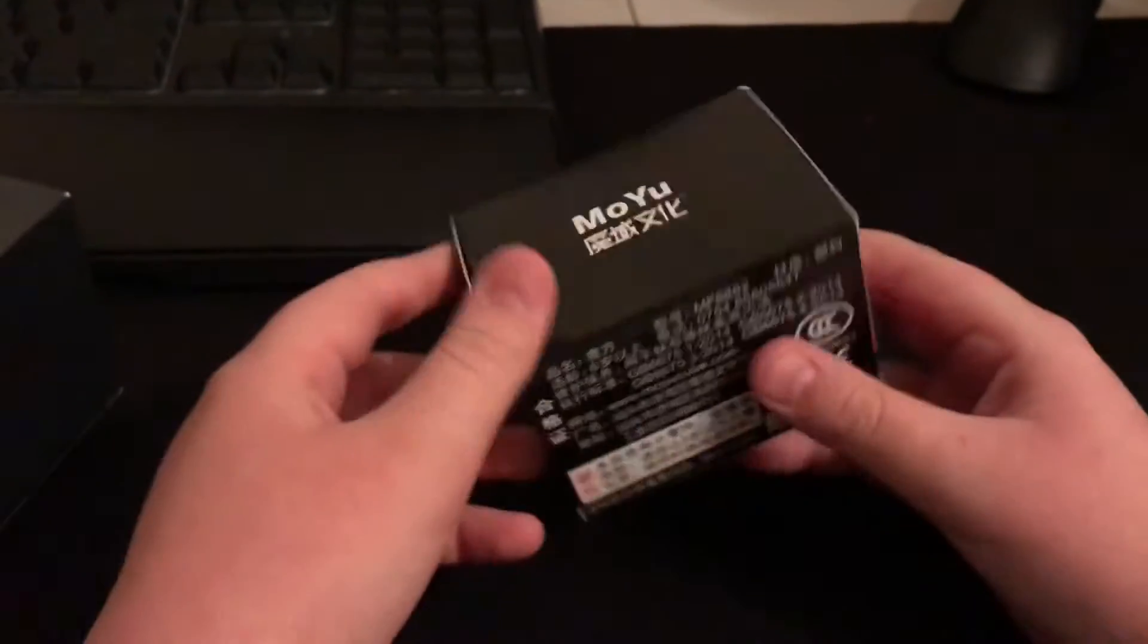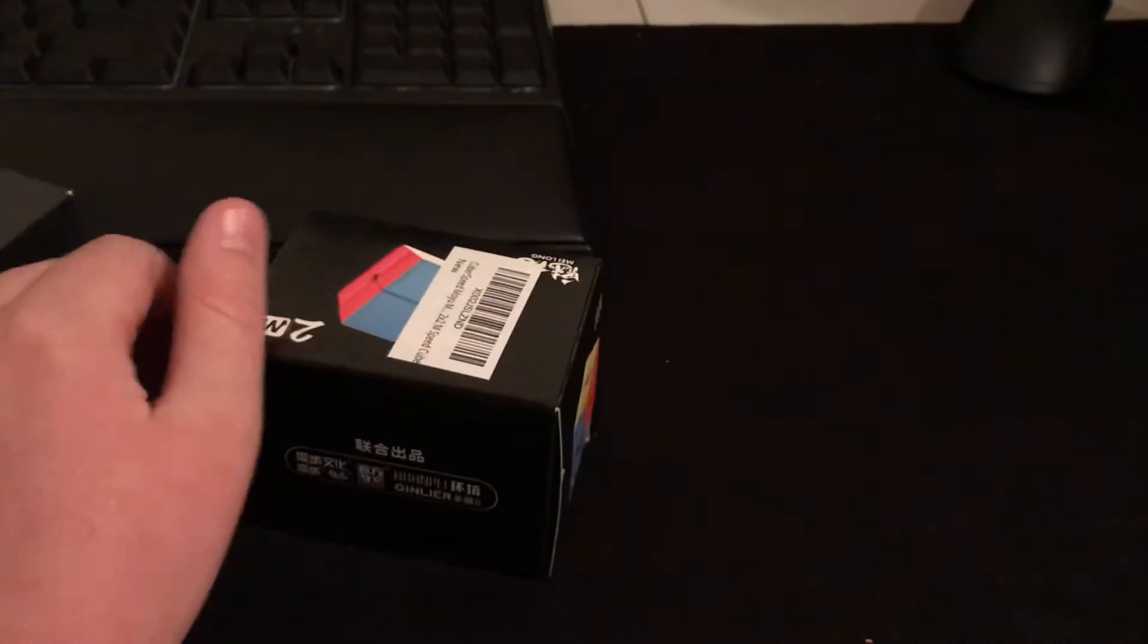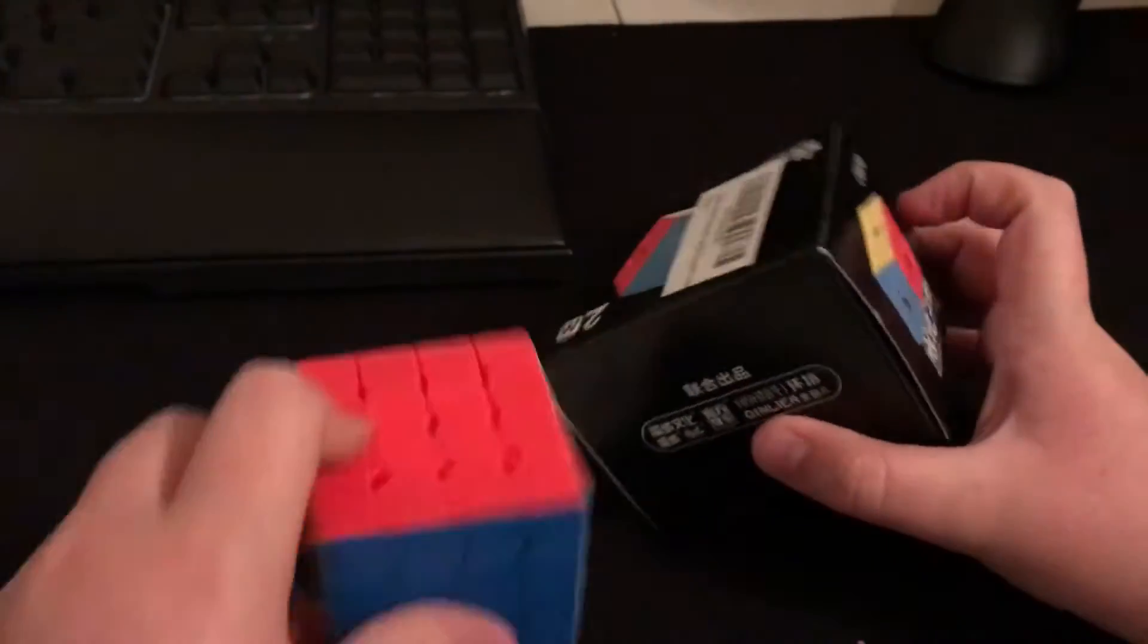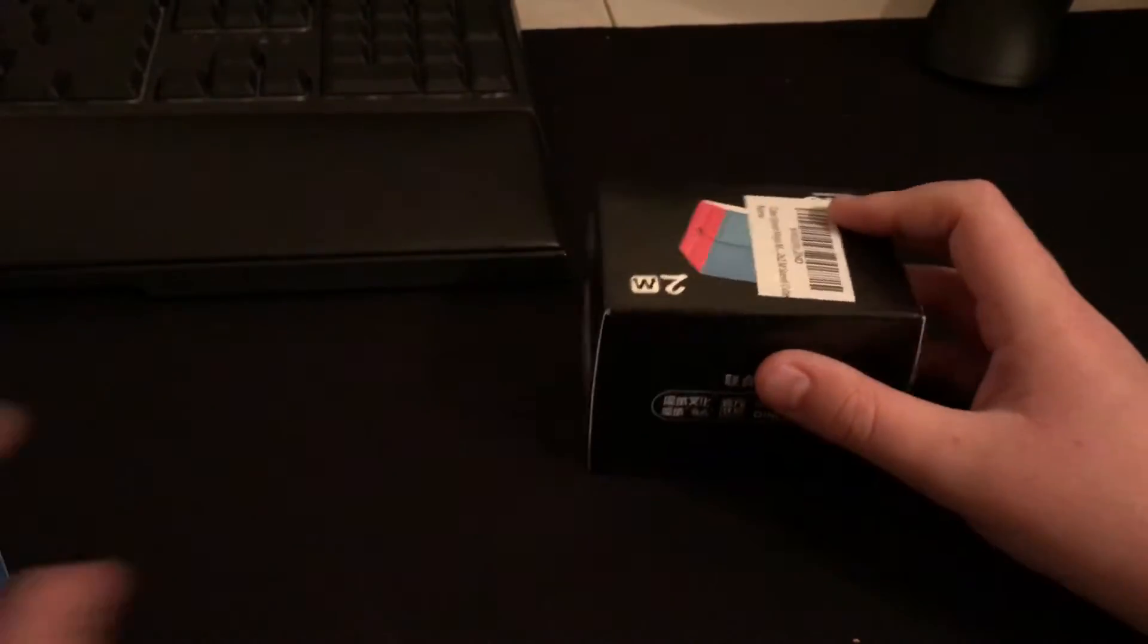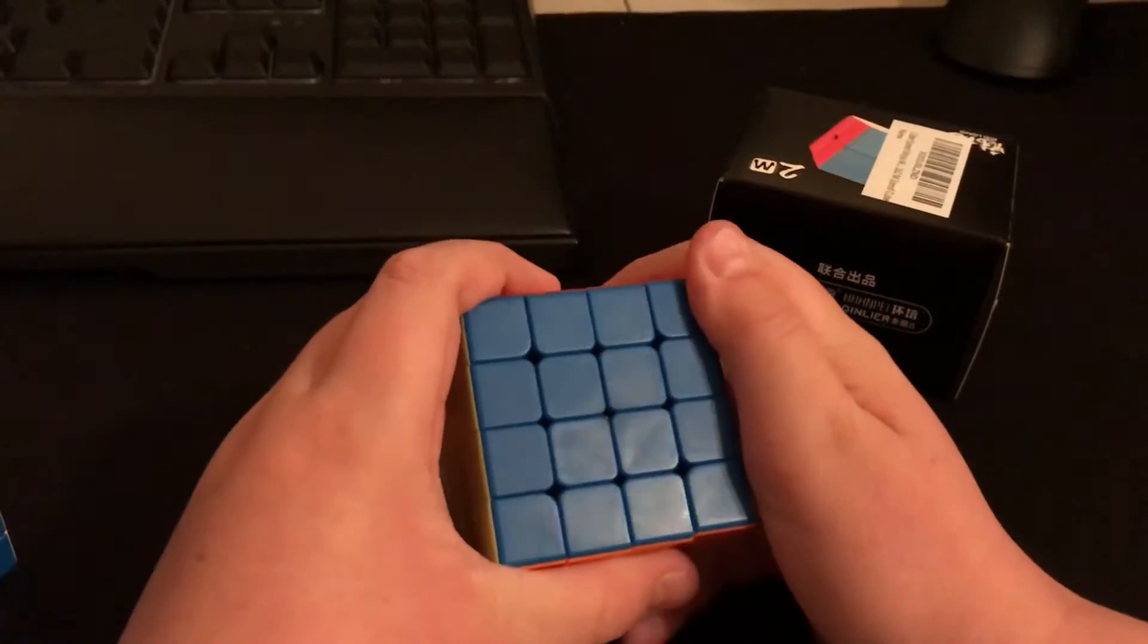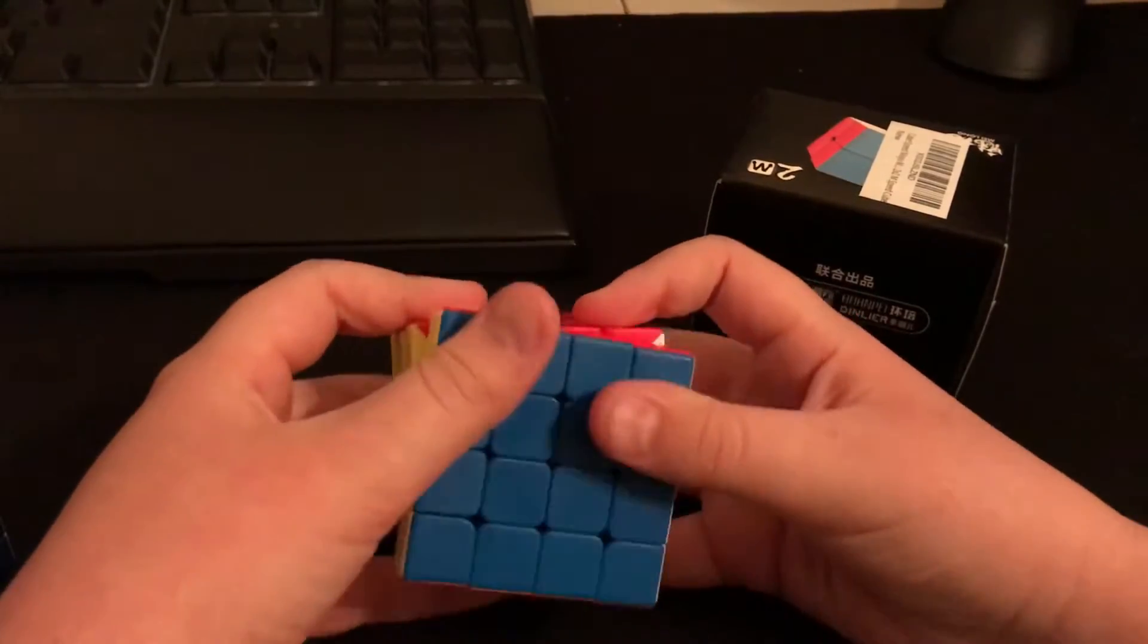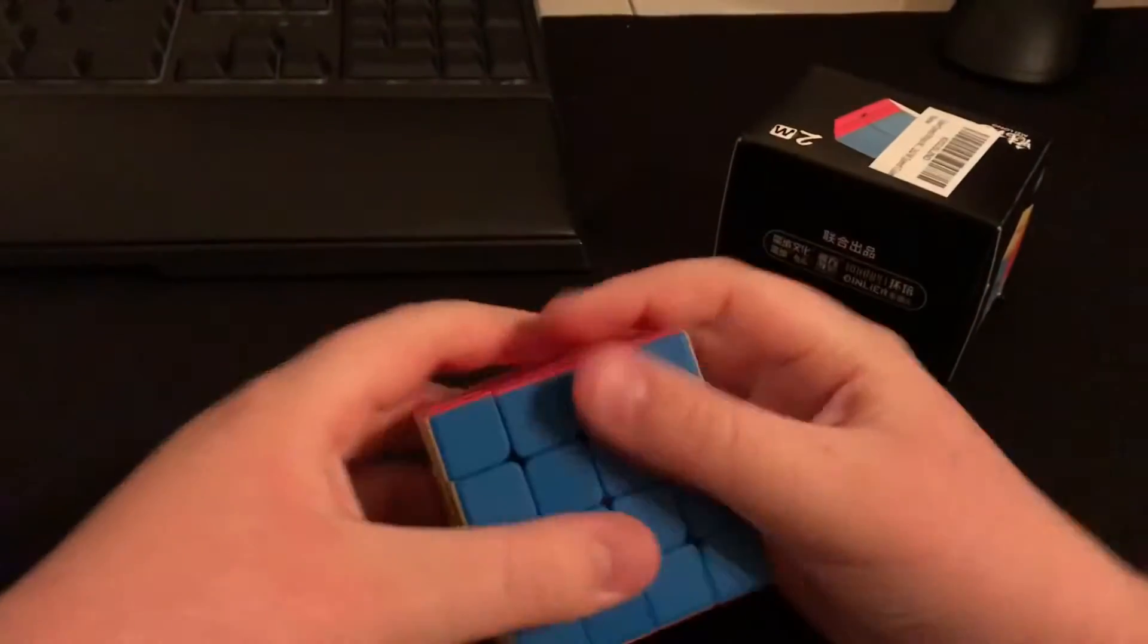Next we have the two by two. I got the four by four and the two by two today, and I got the five by five for Christmas like I said. Oh yeah, another thing about the four by four—it has a textured feeling, I think it's called frosted. It feels like it almost has some fur on it or something. This one just feels like plastic or rubber.